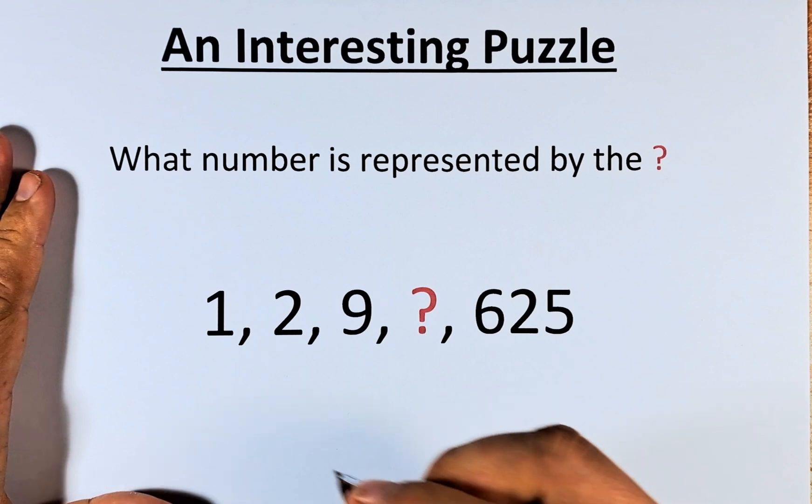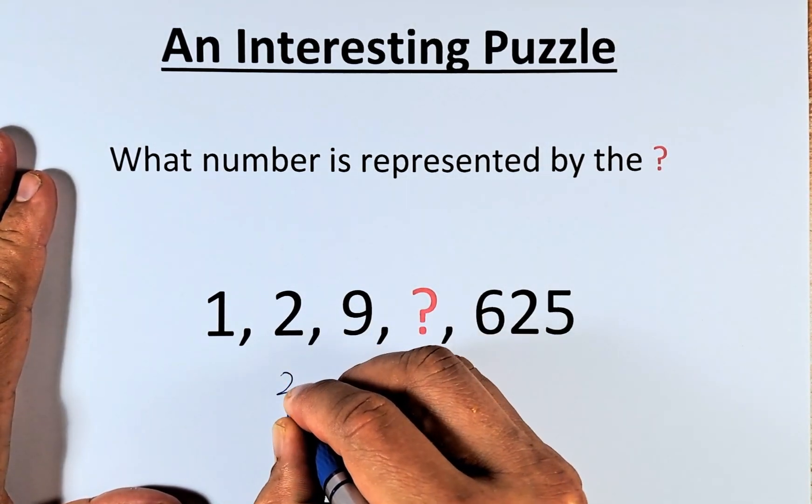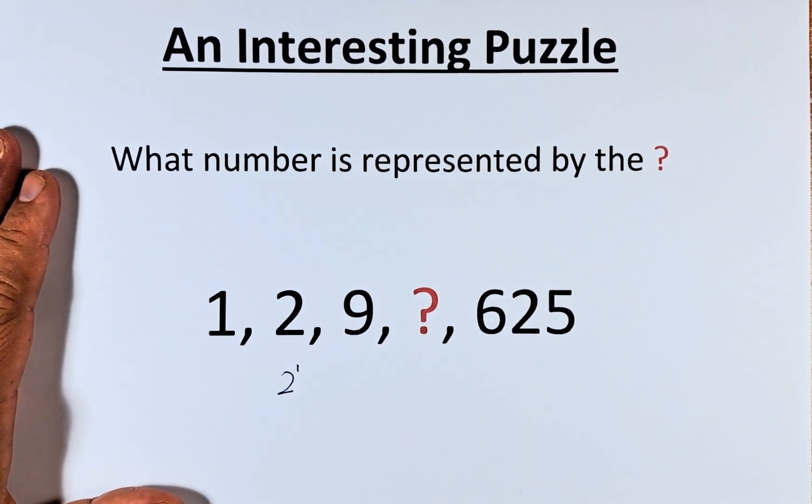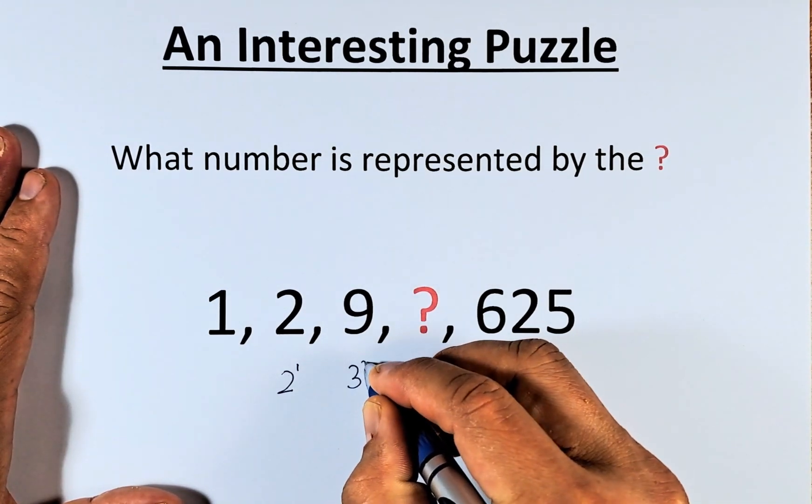So the solution is as follows. We'll leave 1 for a moment. 2 is the same as 2 to the power of 1. And then we are going to find what is 9. 9 is 3 to the power of 2.